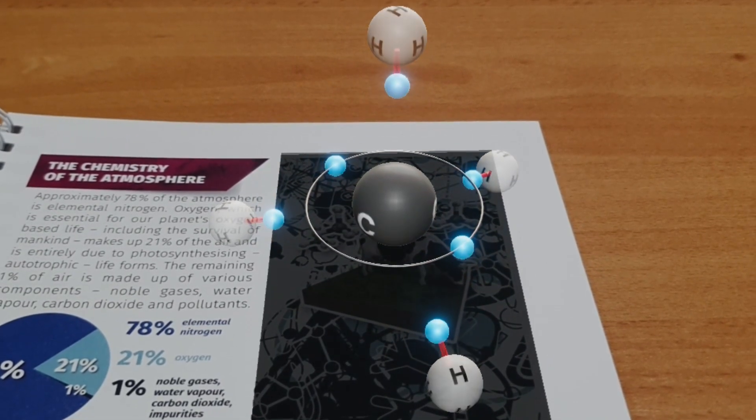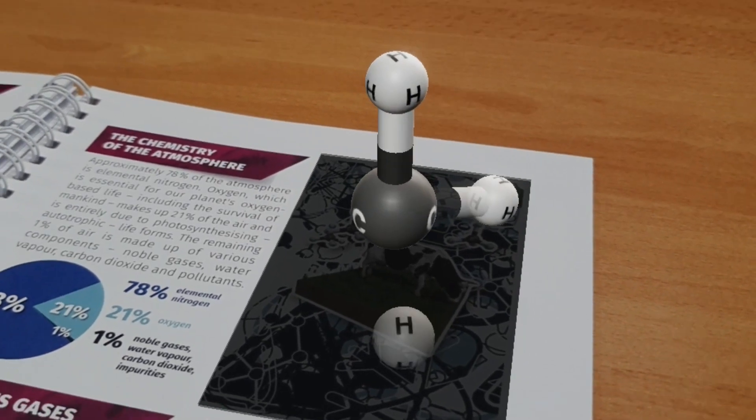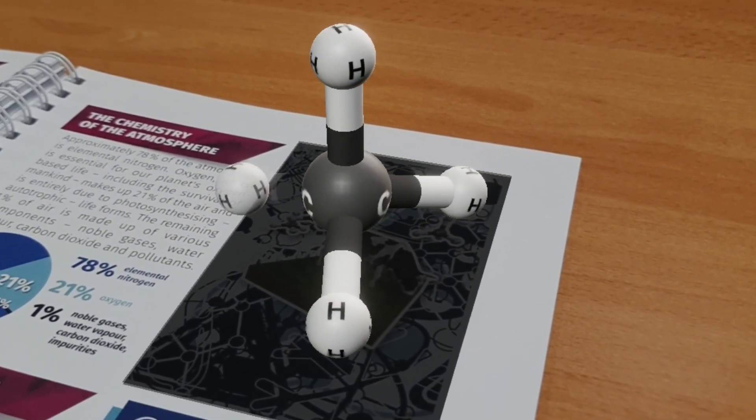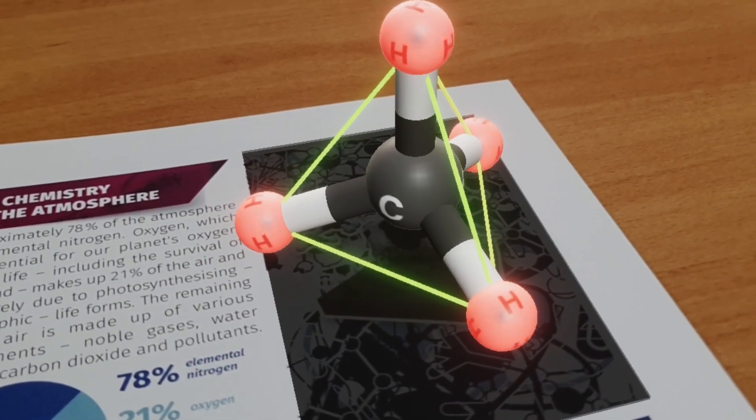The covalent bonds are formed as far apart as possible. The hydrogen atoms are located at the vertices of a tetrahedron.